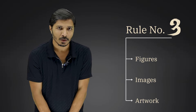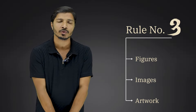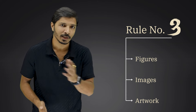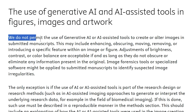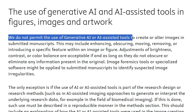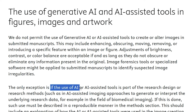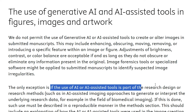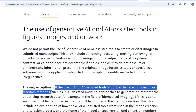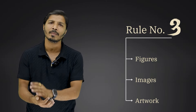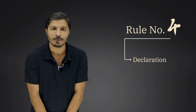Rule number 3 is related to figures, images, and artwork. There are multiple tools available that can create attractive images, figures, and artwork, but before using them you must note: most journals do not permit the use of generative AI or AI-assisted tools to create or alter images in submitted manuscripts. The only exception is if the use of AI tools is part of your research design or research methods. Simply put, you cannot use generative AI tools to create any schematic, including a graphical abstract, for your manuscript.